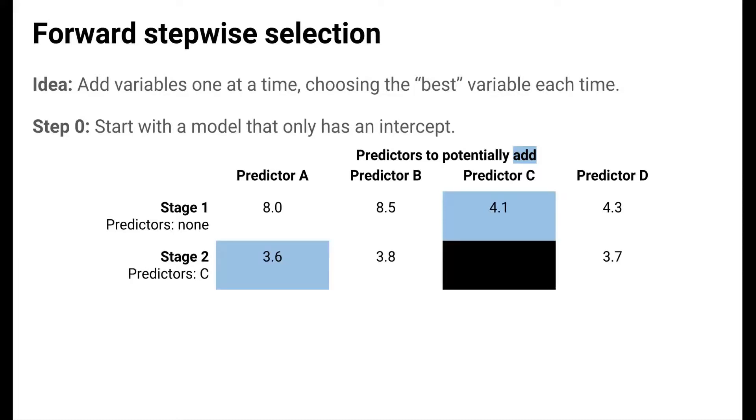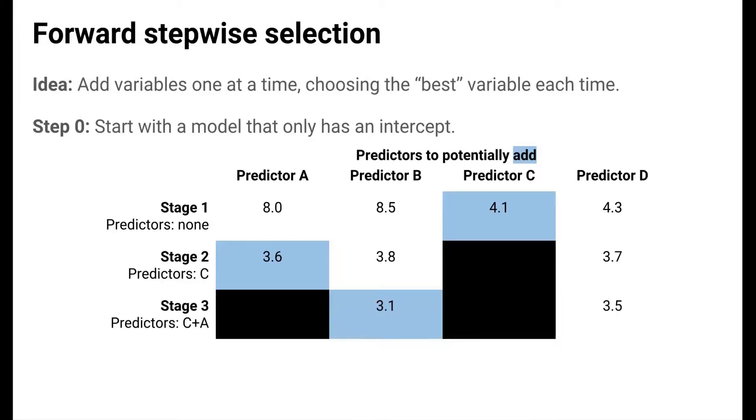In the next stage, we start from a model with predictor C. We then consider adding A, B, or D. It turns out that the model that adds A results in the lowest cross-validated mean squared error. So in the third stage, we start from the C plus A model and consider adding B or D. Adding B results in the lowest cross-validated mean squared error.